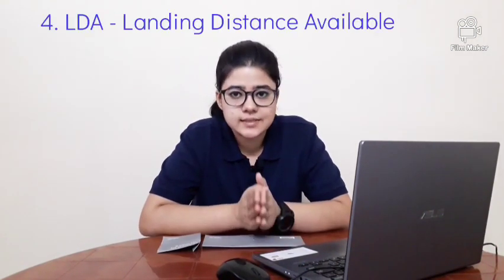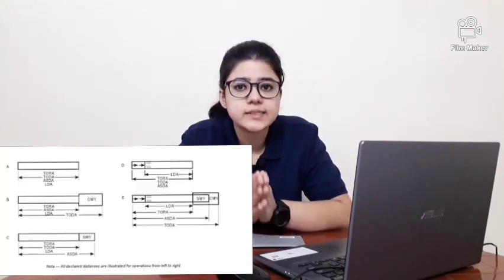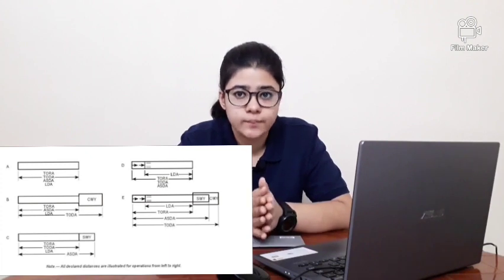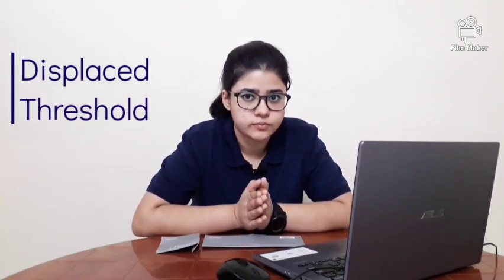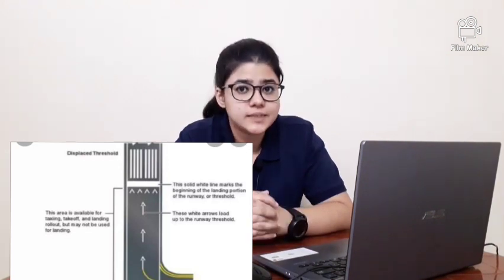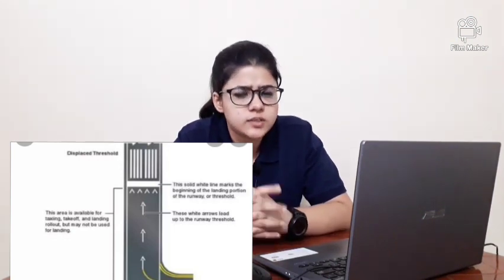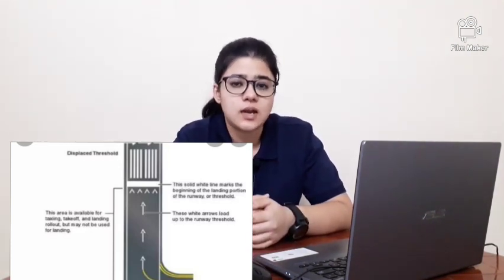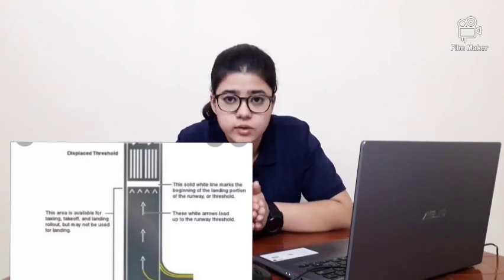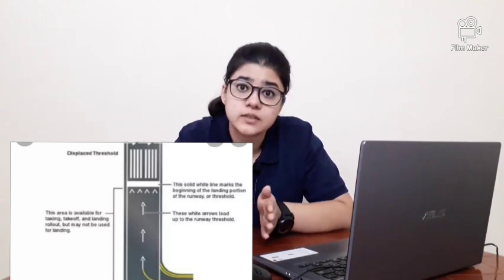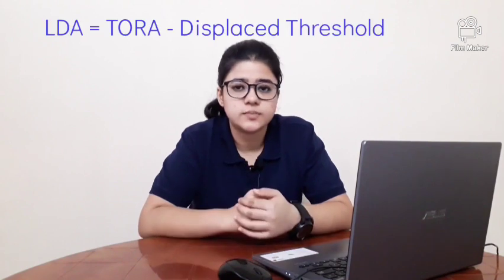The fourth declared distance is the Landing Distance Available, or LDA — the length of runway declared available and suitable for landing. To understand the difference between TORA and LDA, we need to understand the concept of displaced threshold. A threshold is the beginning of the portion of runway usable for landing. Sometimes this threshold may not be at the extremity of the runway due to conditions like noise abatement procedures, runway strength, or obstacles before the runway that do not allow an appropriate glide slope. In such cases the threshold is positioned away from the runway extremity, forming a displaced threshold, and the displaced length may be used for takeoffs and landing rollout but not for touchdown.